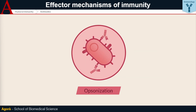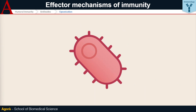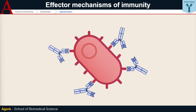Second, antibody opsonisation: antibodies can decorate the surface of the pathogens, along with other components of innate immunity, and promote their uptake by phagocytes and subsequent elimination. This process of preparation for phagocyte recognition is precisely called opsonisation.